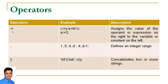We also have some special operators. It is important to note the usage of the assignment operator. The symbol for the assignment operator is colon equal to (:=). An assignment operator is used to assign the value of an operand or expression on the right to the variable or constant on the left — for example, y is assigned to variable x, or 3 is assigned to variable a. It is important to note that simple equal (=) is used for comparison, while colon equal (:=) is used for assignment.